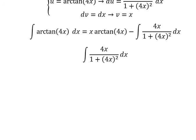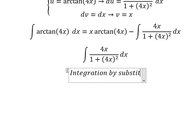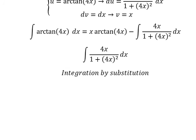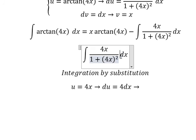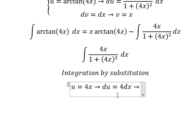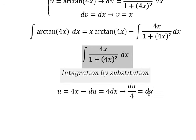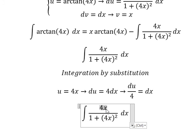We can use integration by substitution, so I will put u equals 4s. Then we need to do the first derivative for both sides. Since we don't have the number 4 in the numerator by itself, we need to divide both sides by 4, so ds equals du over 4, and 4s is replaced by u.